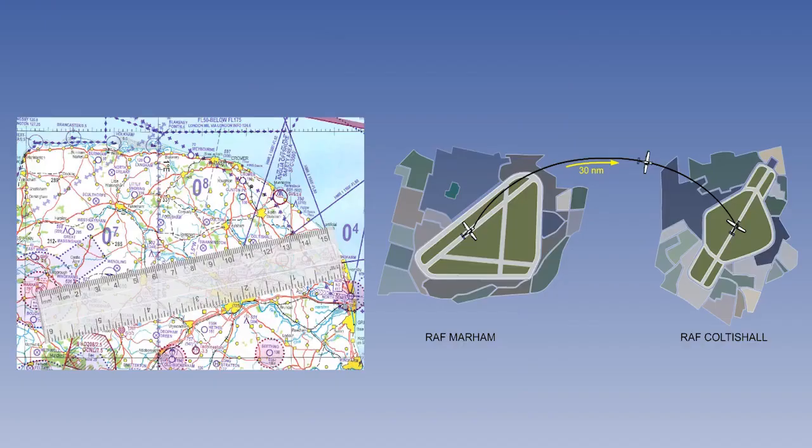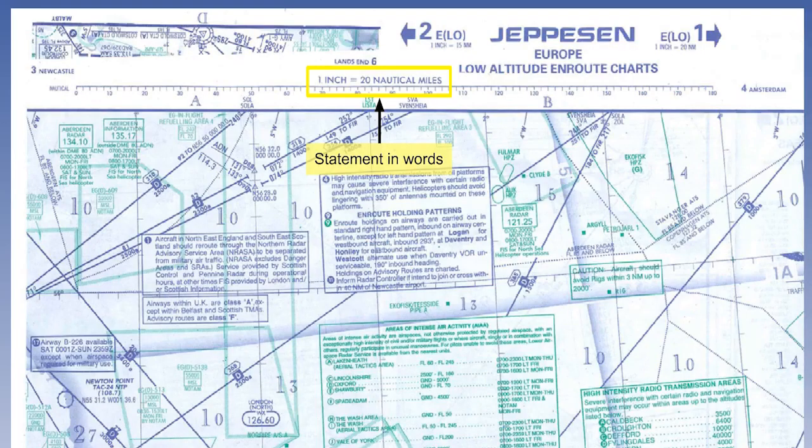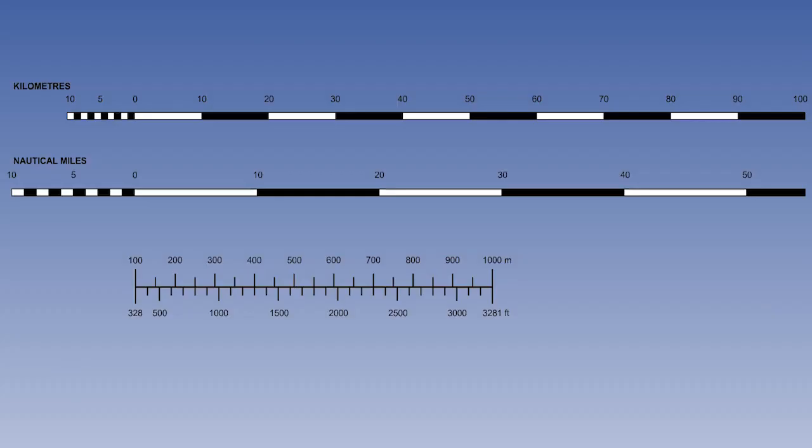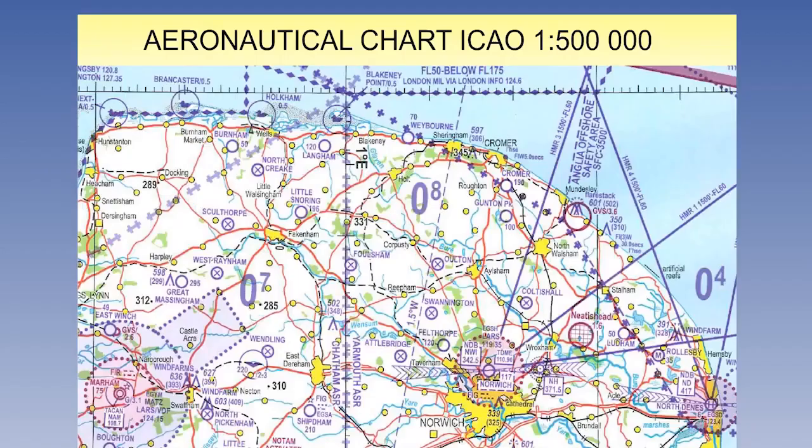So let's summarise. We have seen that scale is defined as the relationship between the length of a line drawn between two positions on a chart and the distance on the earth between the same points. There are three common methods of expressing scale. A statement in words. A graduated scale line. Or a representative fraction.